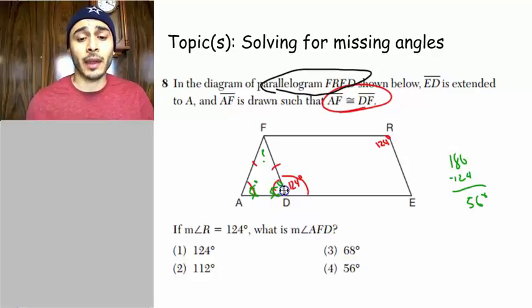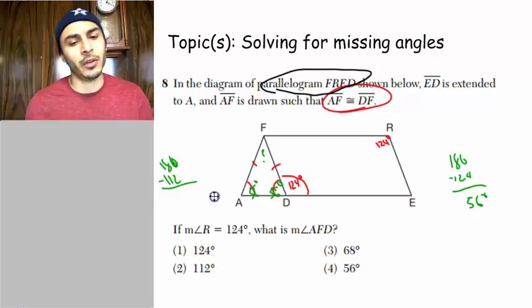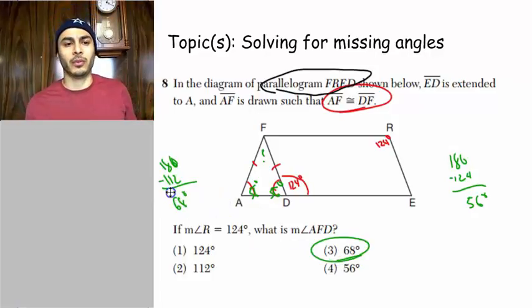And then now knowing these two angles, we can go ahead and solve for that missing angle right there. Let's add them up. 56 plus 56 is 112. 180 subtract 112. So the answer is choice three.